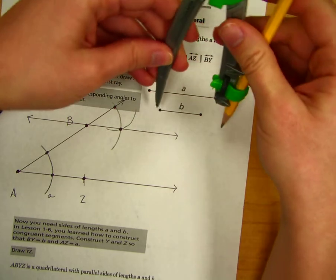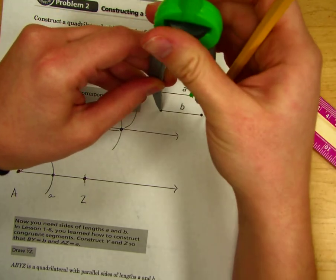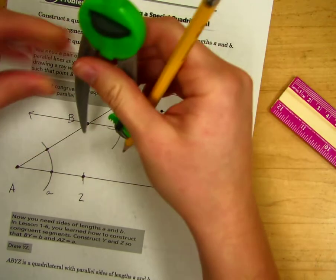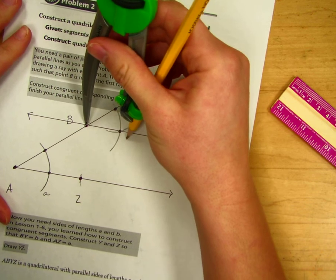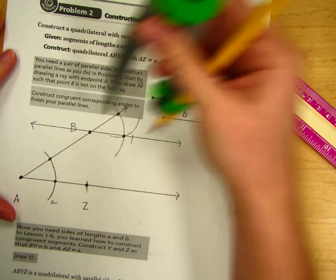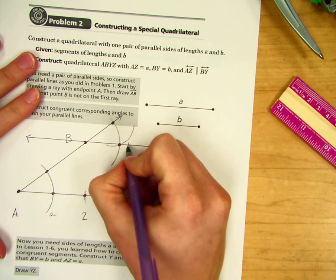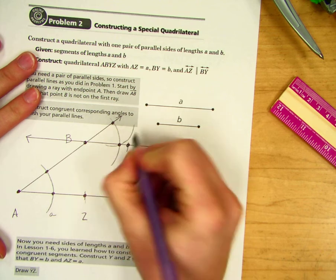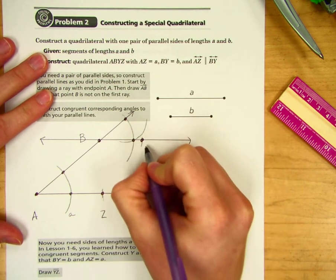Do the same thing with B. Make it smaller. We're going to take this on point B, draw the mark, and label this as Y.